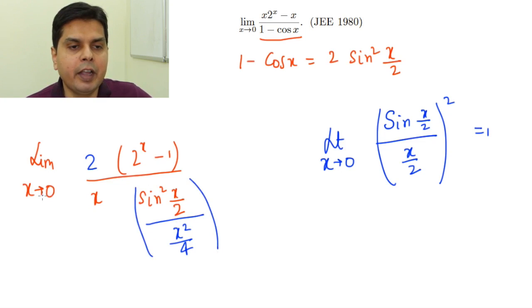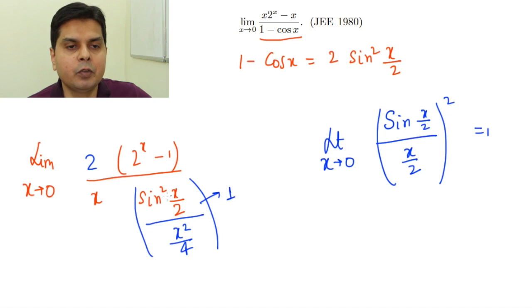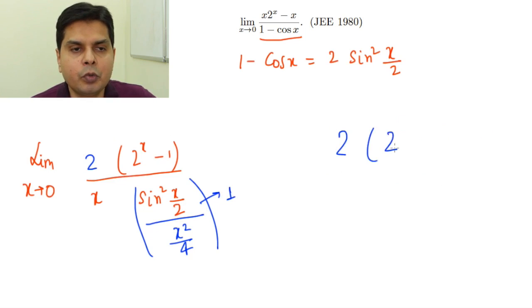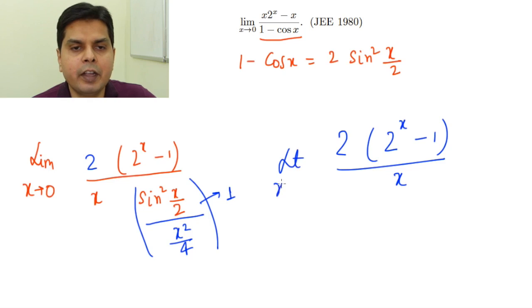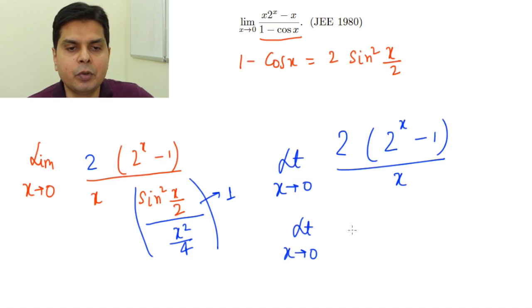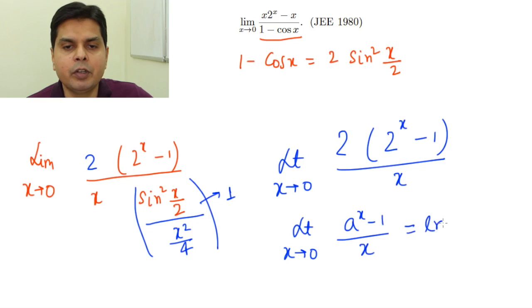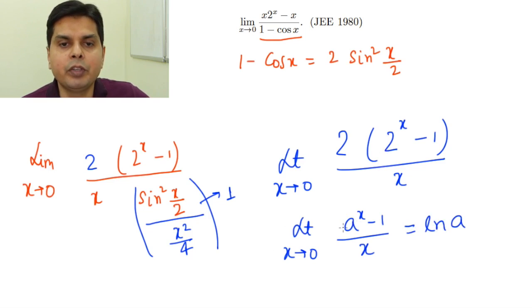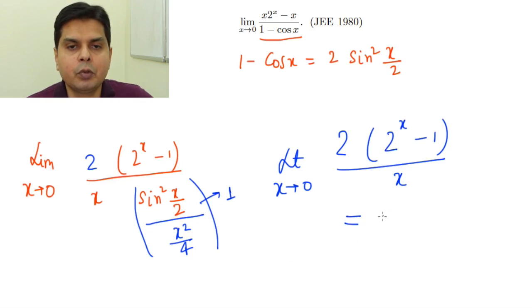As the limit x tends to 0, the sine expression equals 1, so that part becomes 1. Now I only need to find the limit of (2 to the power x minus 1) divided by x, as x tends to 0, multiplied by 2. Using the formula: limit as x tends to 0 of (a^x minus 1)/x equals ln(a), substituting a = 2, this limit becomes ln 2.